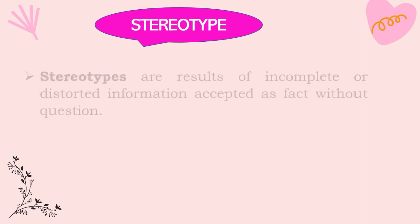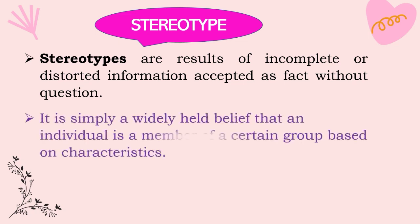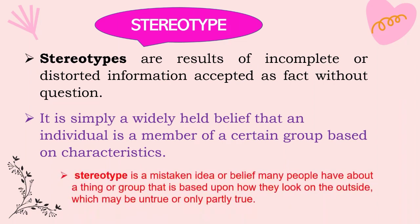What is stereotype? Stereotypes are results of incomplete or distorted information accepted as fact without question. It is simply a widely-held belief that an individual is a member of a certain group based on characteristics. Stereotype is a mistaken idea or belief many people have about a thing or group, based upon how they look on the outside, which may be untrue or only partly true.